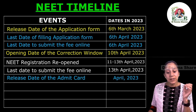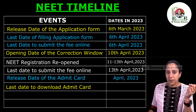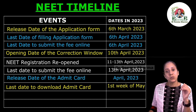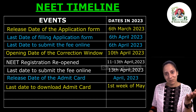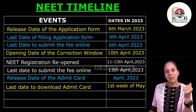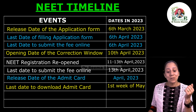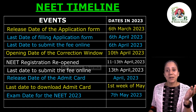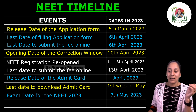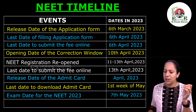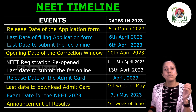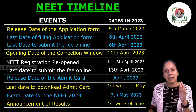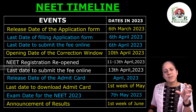The last date to download the NEET admit card is the first week of May 2023, obviously before the date of the exam. The date of the NEET 2023 exam is 7th May, and the announcement of results will be in the first week of June. This is the general timeline, and more or less the same will apply for 2024 as well.